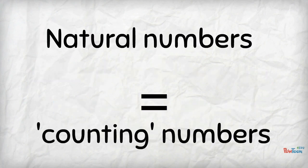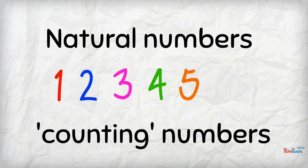Natural numbers just means the counting numbers 1, 2, 3, 4, 5, and so on. No negative numbers and no fractions.